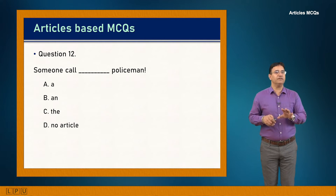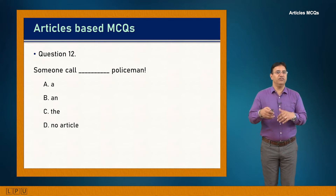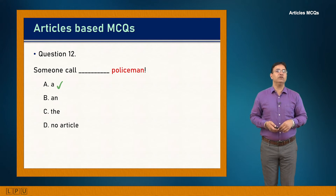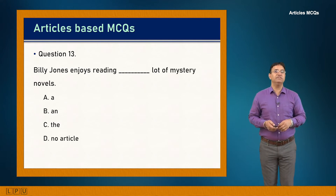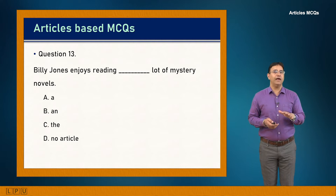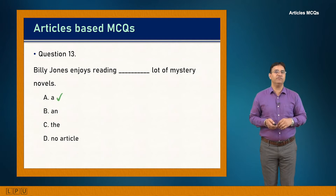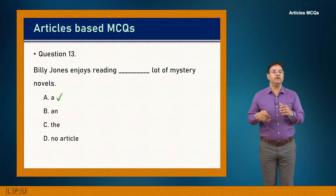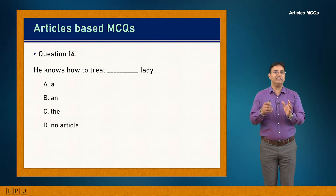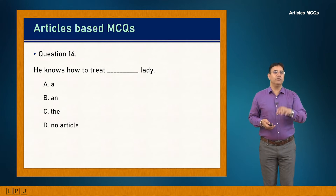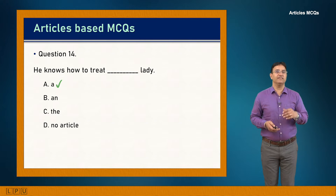Question 12: Someone called dash policeman. There is no specific policeman identified — it's a generic call. Answer is A: 'Someone called a policeman.' Question 13: Billy Jones enjoys reading a lot of mystery novels. No specific novels are identified, so no article is needed. Answer is A — 'a lot of mystery novels.'